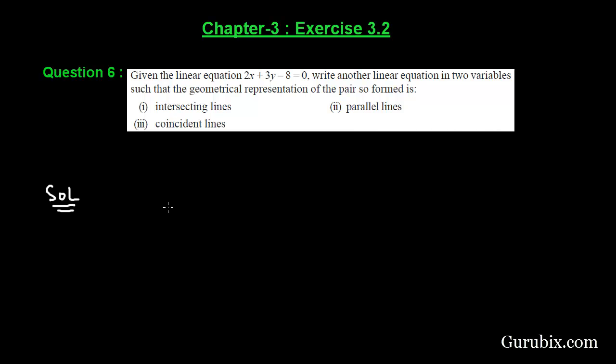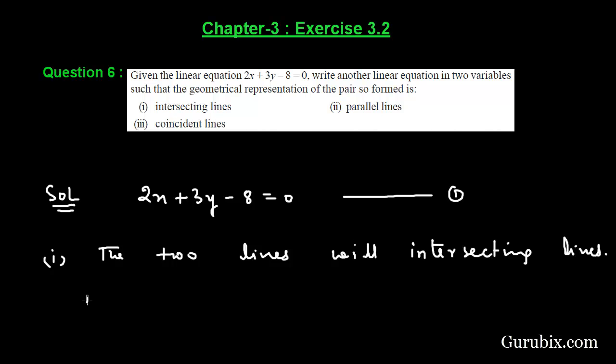Let us solve this question. We are given the equation 2x plus 3y minus 8 equals 0. Let this be our equation number 1. For case 1, we know that the two lines will be intersecting if a1 over a2 is not equals to b1 over b2.